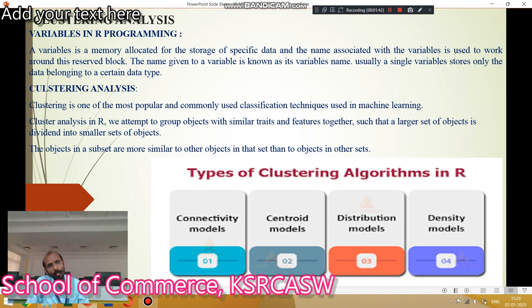Variables in R programming. A variable is memory allocated for the storage of specific data and the name associated with the variable is used to work around the reserved block. The name given to a variable is known as its variable name. Usually, a single variable stores only the data belonging to a certain type of data.